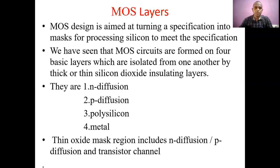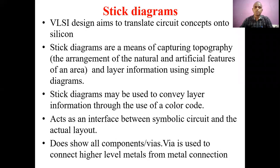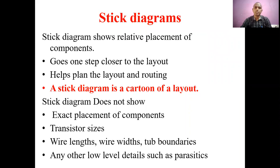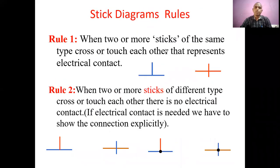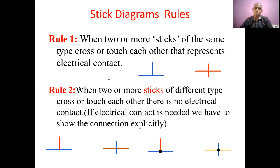Good afternoon students. In the previous class we have seen about the different types of mask layers: N-diffusion, P-diffusion, polysilicon, and metal. We also covered stick diagrams and the different rules for stick diagrams — Rule 1, Rule 2, Rule 3 — that is, when two or more sticks of the same type cross or touch each other, that represents electrical contact. These rules are very important while drawing stick diagrams for both NMOS and CMOS transistors.